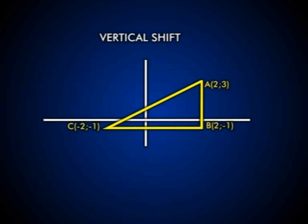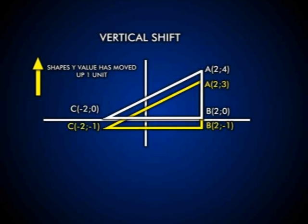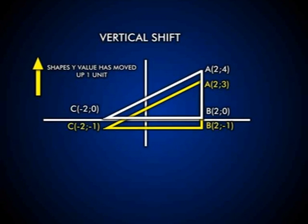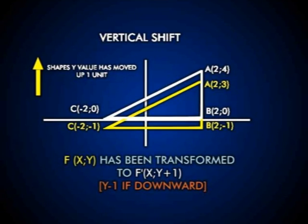Now imagine I take that triangle and shift it upward by 1 unit. Have my x values changed at all? No. For A, my x value is still 2, and my y value has now moved to 4. B's x coordinate is still 2, and the y value has moved up 1 to 0. For C, my x coordinate is still negative 2, and my y value has gone up to 0. My shape has been shifted 1 unit upward.